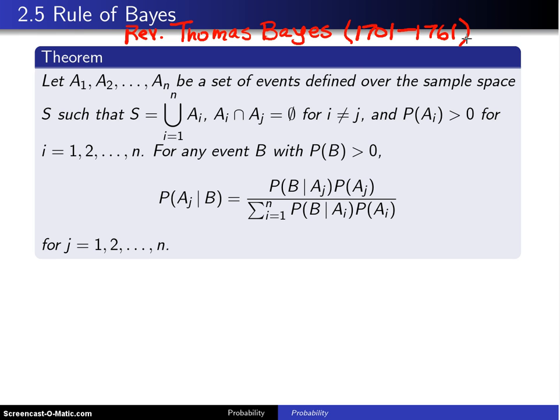Here is the theorem. Let A1 up to An be a set of events defined over the sample space S such that S is equal to the union from i equals 1 to n of A sub i, and Ai intersect Aj is the empty set for i not equal to j. I'll stop right there and draw a quick Venn diagram for this particular case.